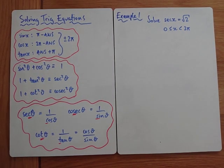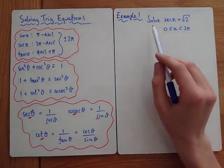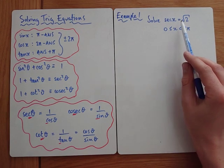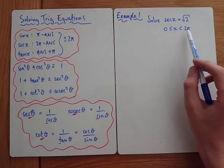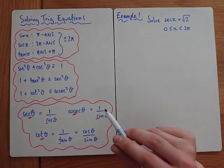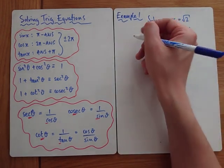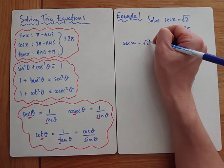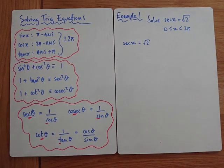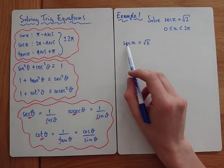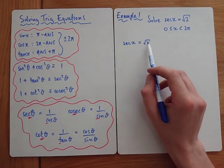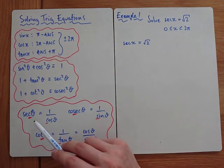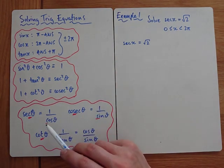In this video we're going to look at a couple of exam style questions on solving trig equations with the new ratios. First one says solve sec x equals root 2 between 0 and 2π. Be careful — you clearly can't take sec inverse because there isn't a button on a calculator for sec inverse. So once you've got a single trig value equal to a number and you're trying to take the inverse, the first step is to turn it back into sine, cos, or tan.